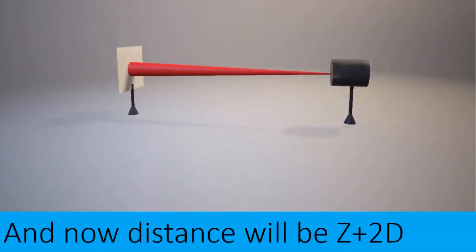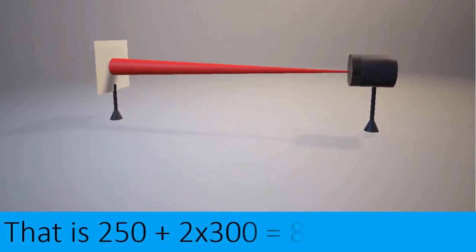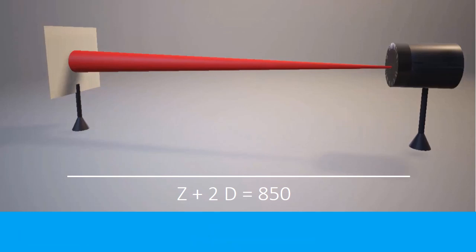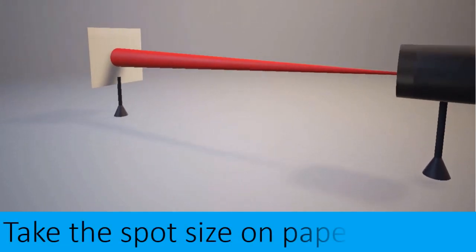Now for the third reading the distance is increased to z plus 2d. You will see that spot size is getting bigger with increase in distance. Now let's calculate diameter.